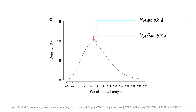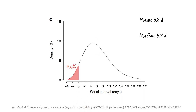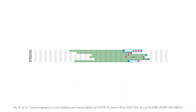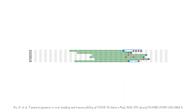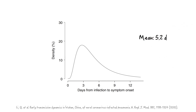They found that the mean serial interval was 5.8 days and that the median serial interval was 5.2 days. Interestingly, in 7.6% of pairs the serial interval was negative, which means that in these pairs the infectee got sick before the infector. The authors also needed to know the incubation period, which they took from a New England Journal publication by Lee et al., who found that the mean incubation period was 5.2 days.